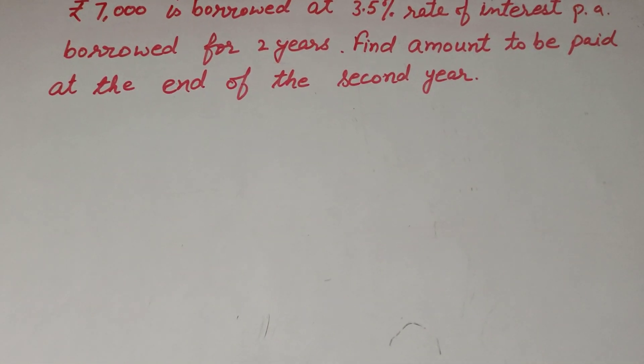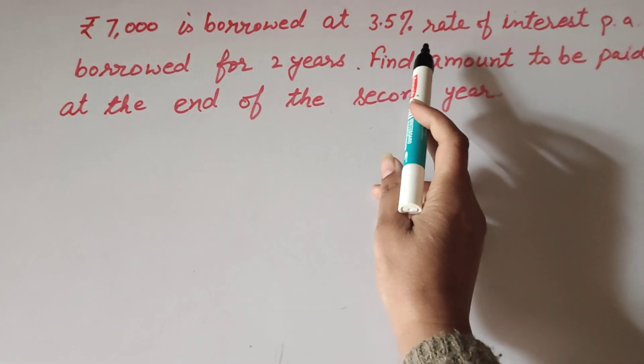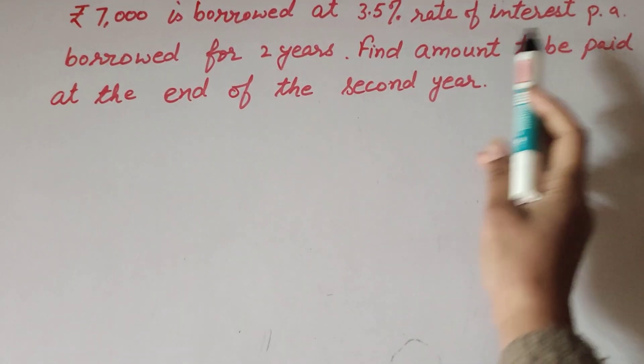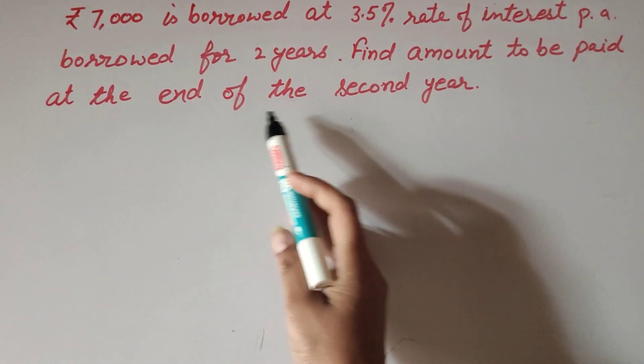Hello friends, welcome to my channel. In this video, we discuss: ₹7000 is borrowed at 3.5% rate of interest per annum for two years. Find the amount to be paid at the end of the second year.